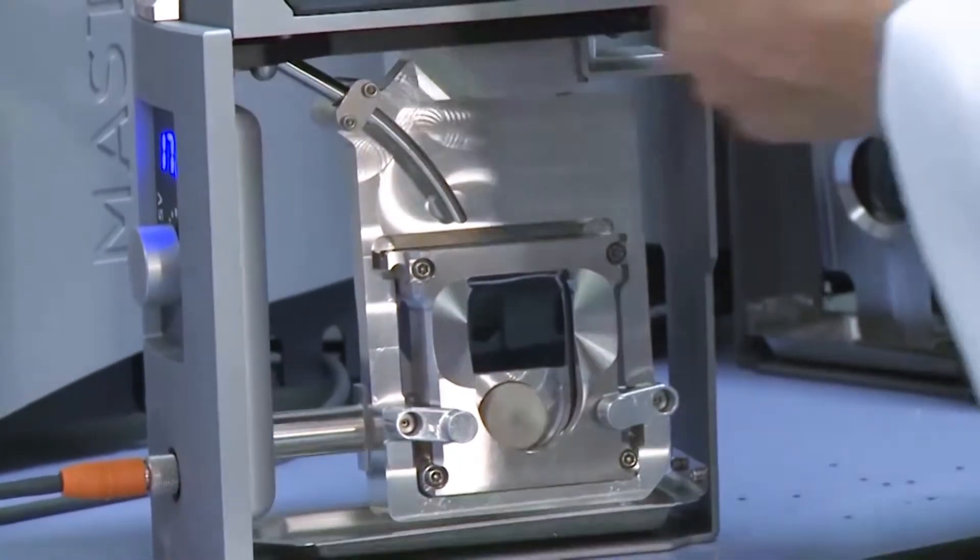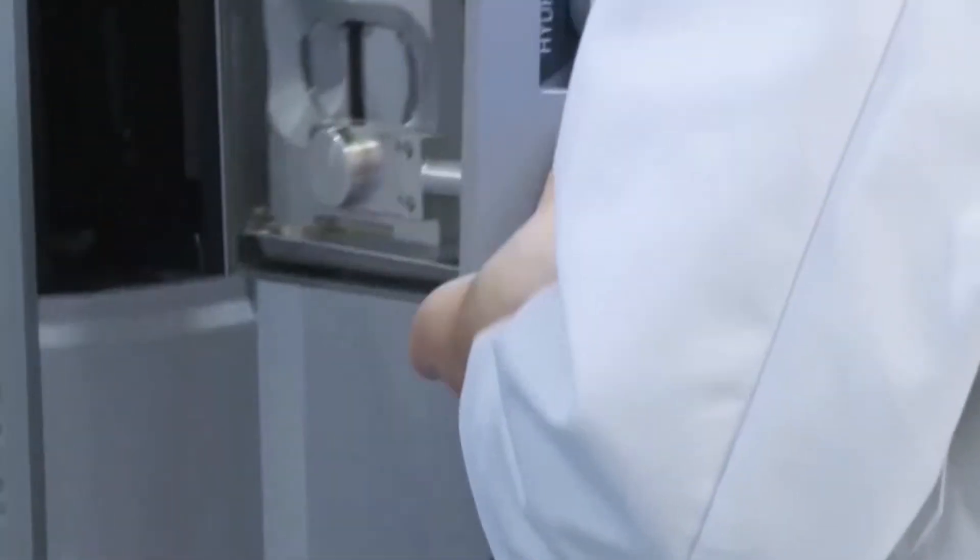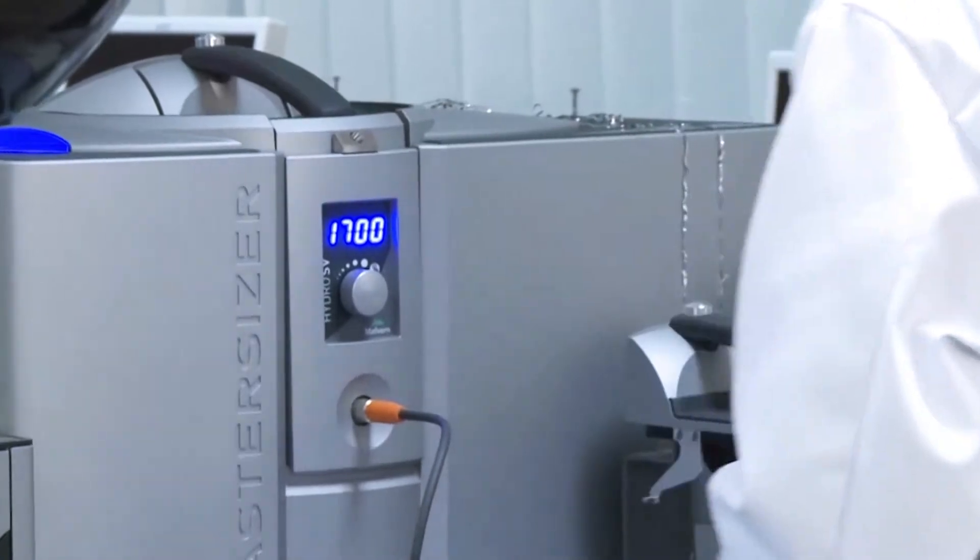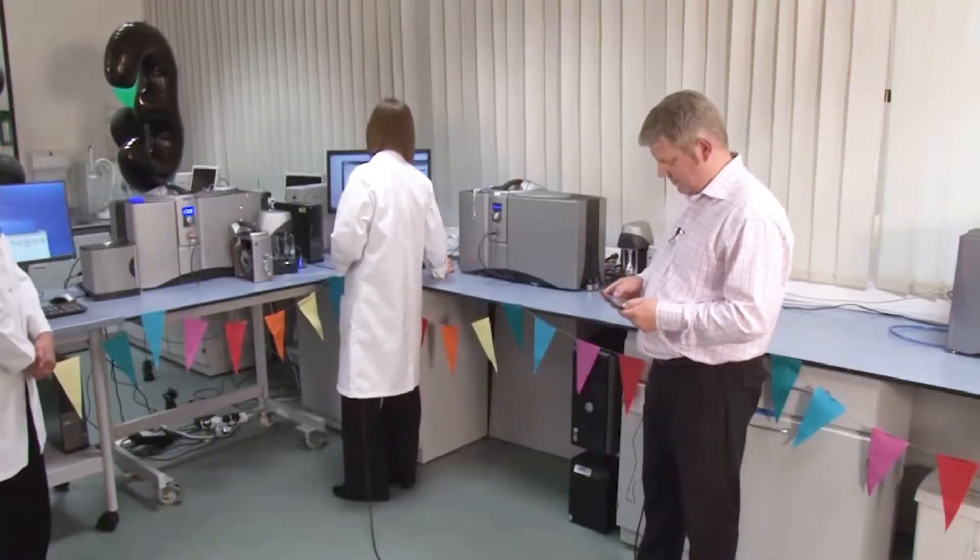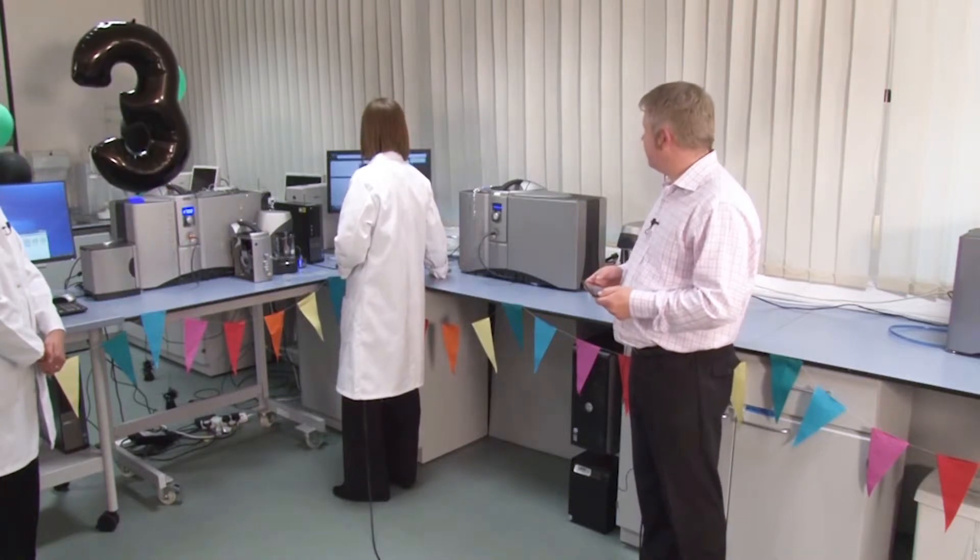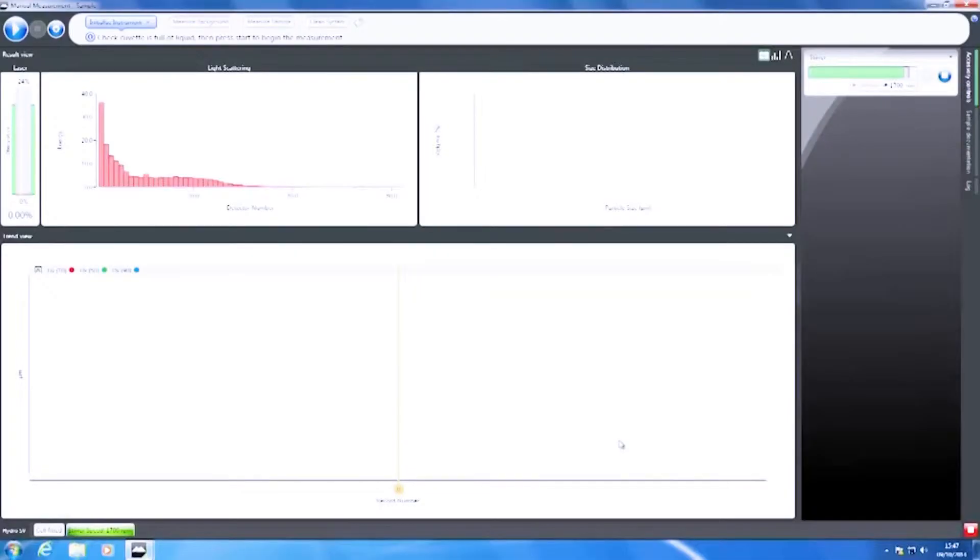There we go. So, what I'm going to do is just slot this into the measurement cell. There we go. And I'll start up a measurement on the Mastersizer 3000. OK. We'll start up the manual measurement, and like any diffraction measurement, what we'll do first is we'll do an alignment and a background, and then I'll drop in some sample, get it to the right kind of obscuration, and then start measuring.